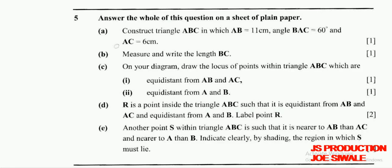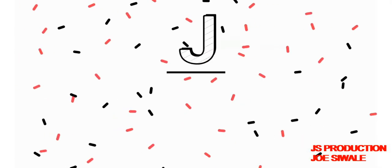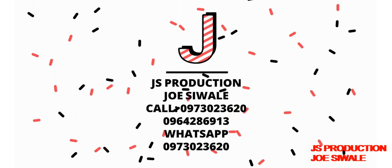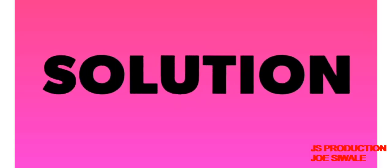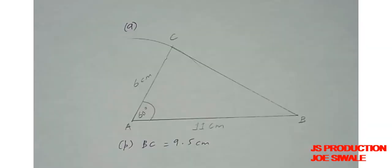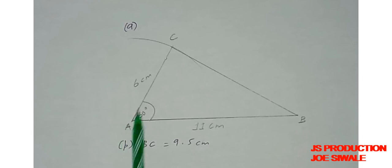Question C number 1 reads: equidistant from AB and AC. One mark. So I need to get the length that is common between AB and AC. A is common, which means I'm going to bisect the angle at A.